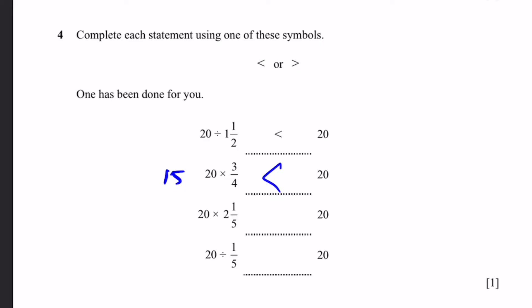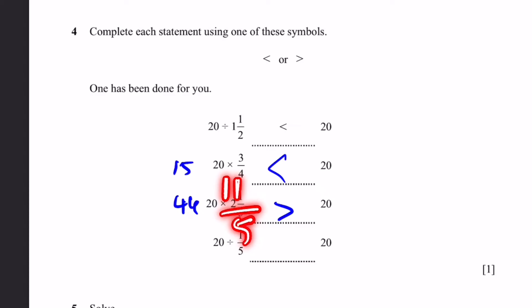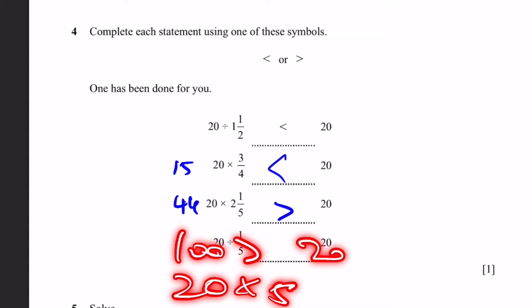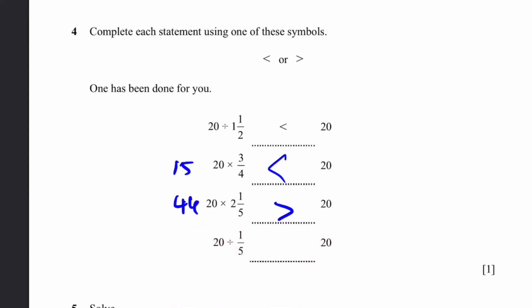20 times 2 and 1 by 5. If you calculated it, then you would actually get 44, which is greater than 20. But even without calculating, you can see that 2 and 1 by 5, or 11 by 5, is going to be greater than 1. Therefore, when you multiply both sides by 20, this is greater. So we have the greater than symbol. 20 divided by 1 by 5. This is the same thing as 20 times 5 if we flip the fraction. And this is 100, which is obviously greater than 20.